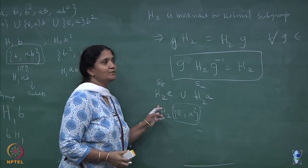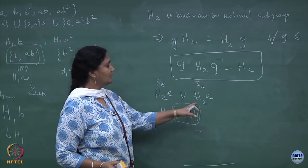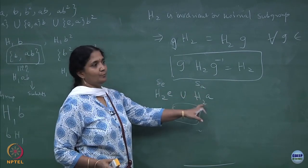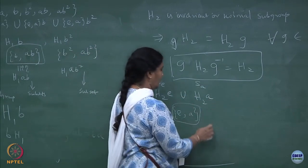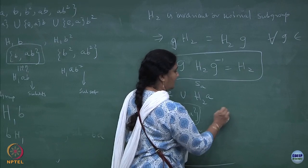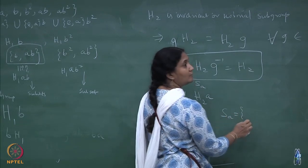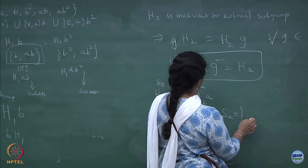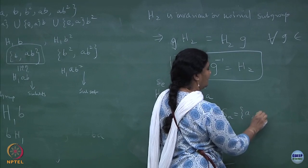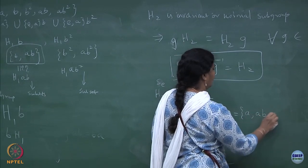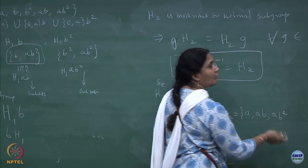S_e is also a group because the identity element does not change the subgroup nature, but S_a is not a group. The S_a set — H2 with A — will have elements A, AB, AB squared, or the other way round.